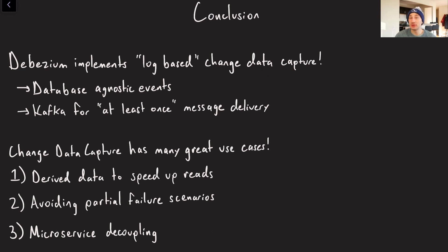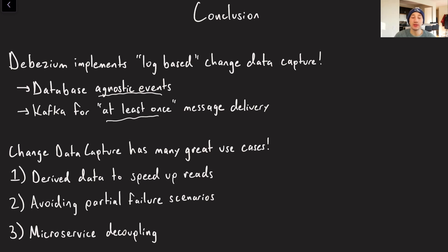In conclusion, Debezium does log-based change data capture, which is more efficient than pull-based or trigger-based approaches. Because all these writes in the log already exist, it's a very low overhead solution for your database. All events are database-agnostic, allowing consumption by many different downstream systems. Kafka ensures at-least-once message delivery and asynchronous processing so we don't overload downstream systems. Change data capture has many great use cases: read-optimized views, derived data, CQRS, audit logs, avoiding partial failure dual-write scenarios, and making microservices easier to manage. Hopefully this video has presented the utility of this technology — and yes, a Flink video is probably coming soon.